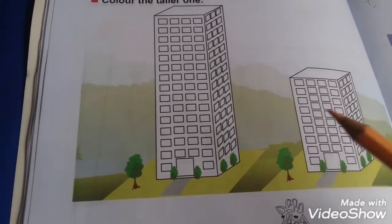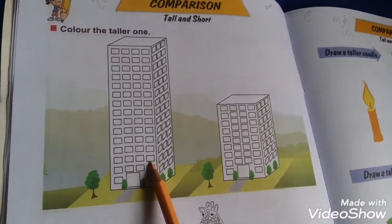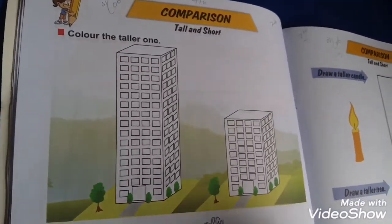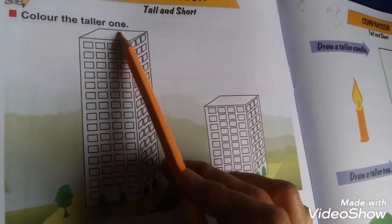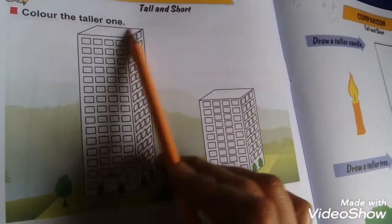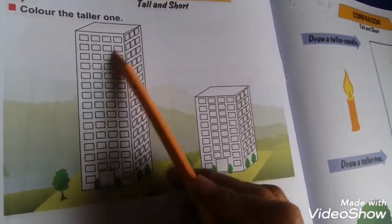You are looking here at two pictures of buildings. Which is the taller one? The left side - this one is the taller one. Take a color and color this picture. This is the taller building.